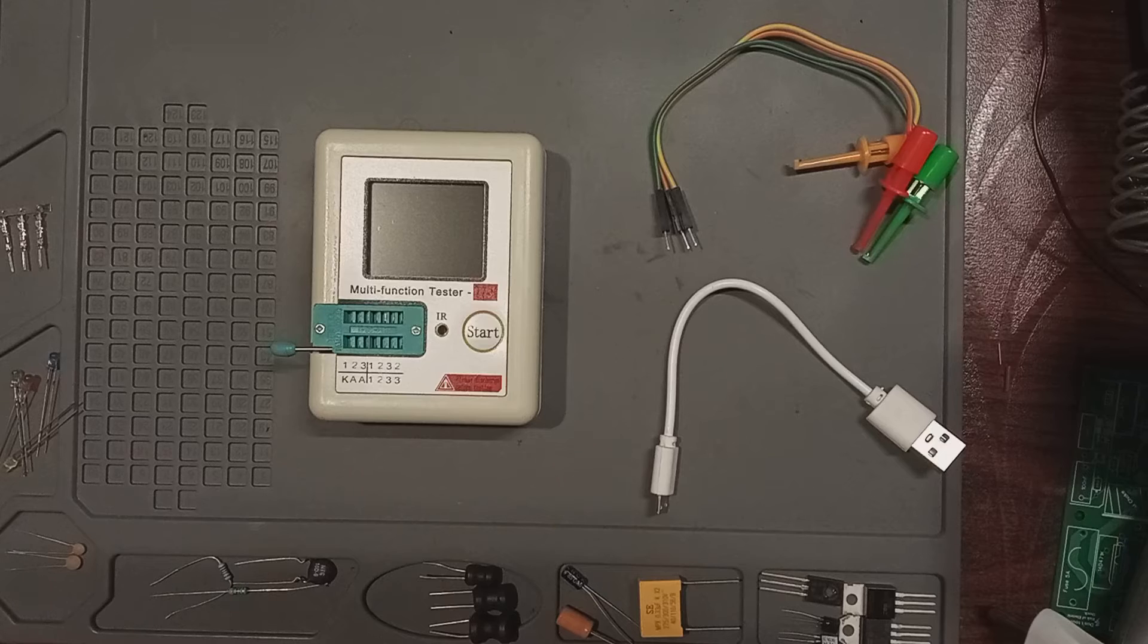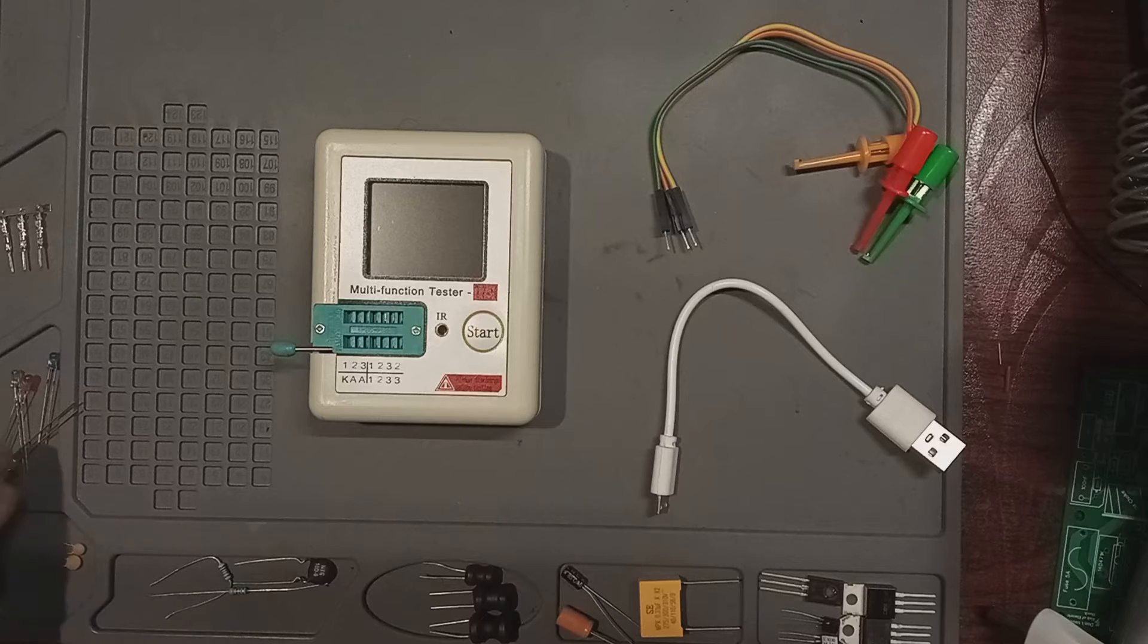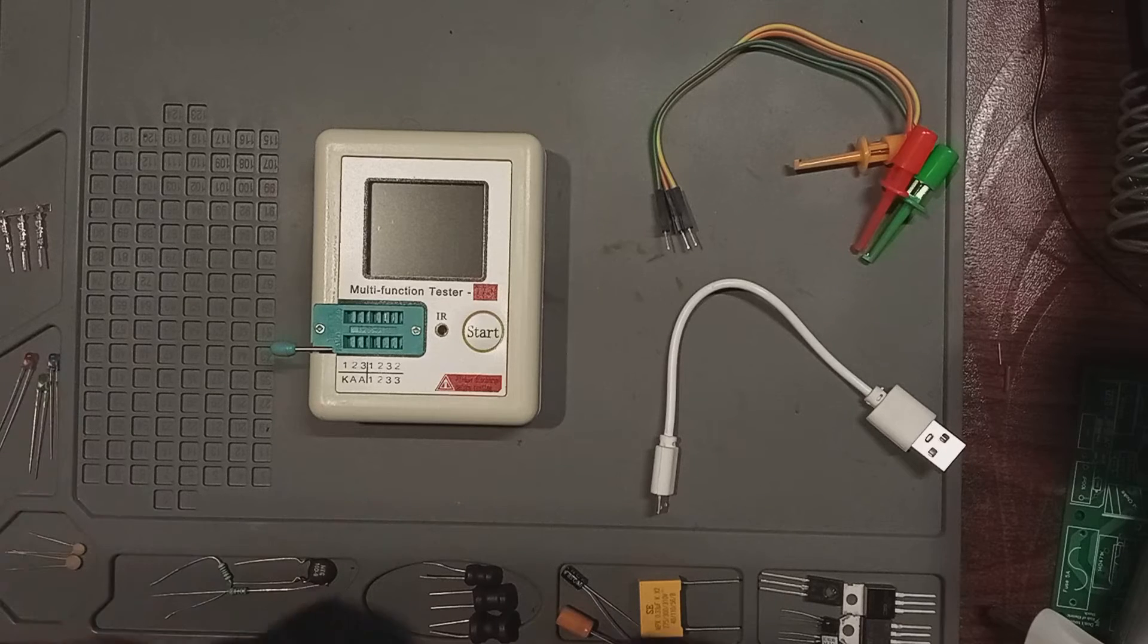Beyond that, the TC-T7H can measure triacs, thyristors, zener diodes up to 30 volts and evaluate LED forward voltages.